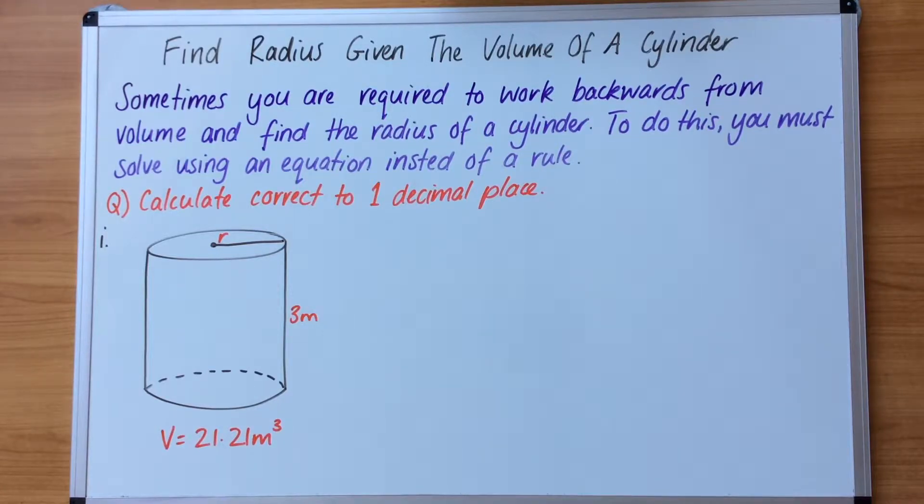In this video we are going to focus on finding the radius given the volume of a cylinder. Sometimes you are required to work backwards from volume and find the radius of a cylinder. To do this you must solve using an equation instead of a rule.